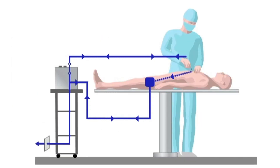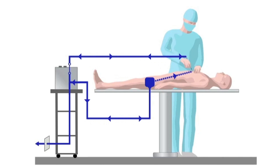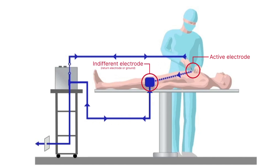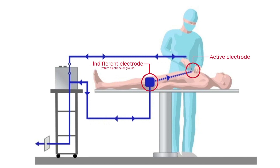Electrosurgery systems are designed to safely use electricity to heat tissue and control the current to achieve the desired tissue effect. Monopolar electrosurgery requires the patient's body to complete the circuit. The surgical device operates as the active electrode. At the other end of the electrical circuit is the indifferent electrode, also called the return electrode, or ground. In this circuit, the current flows from the active electrode, through the patient, to the return electrode, and back to the generator.